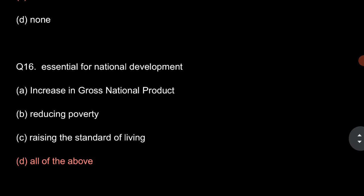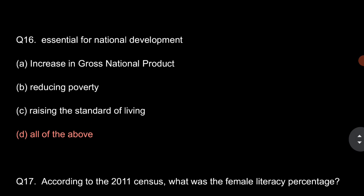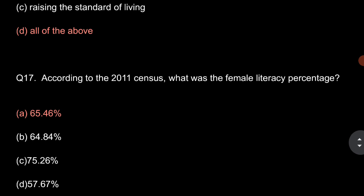Question number 16: Essentials for national development. So, essentials of national development are increase in gross national product, reducing poverty and raising the standard of living. So, all of the above is the correct option. Question number 17: According to the 2011 census, what was the female literacy percentage? So, it was 65.46%.